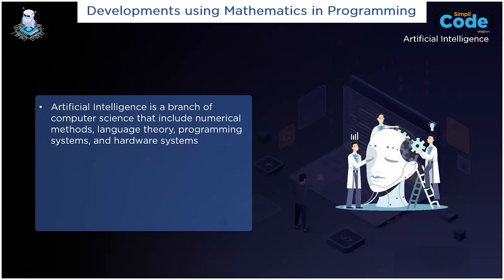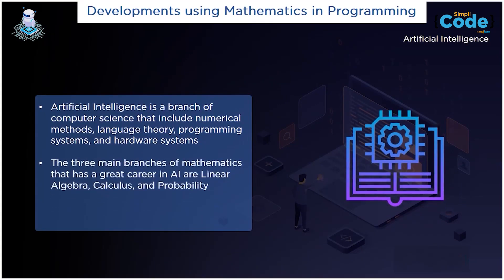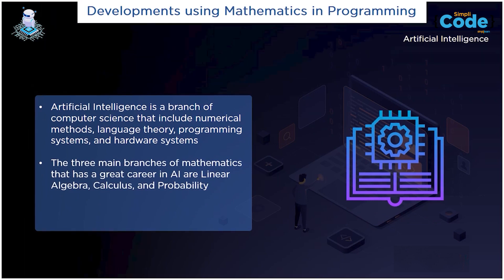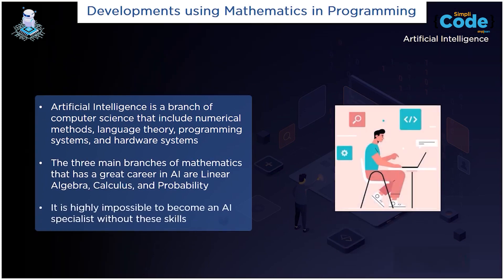Artificial intelligence is a branch of computer science that includes various numerical methods, language theory, programming systems, and hardware systems. The three main branches of mathematics that have a greater role in artificial intelligence are linear algebra, calculus, and probability. It is challenging to become an AI specialist without any experience in mathematics.